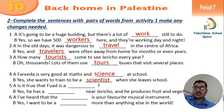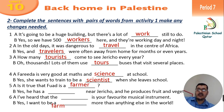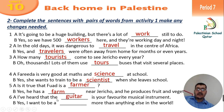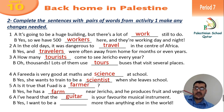Is it true that Fouad is a farmer? Yes. He has a farm near Jericho and he produces fruit and vegetables. I've heard that the guitar is your favorite musical instrument. Yes, I want to be a guitarist more than anything else in the world.